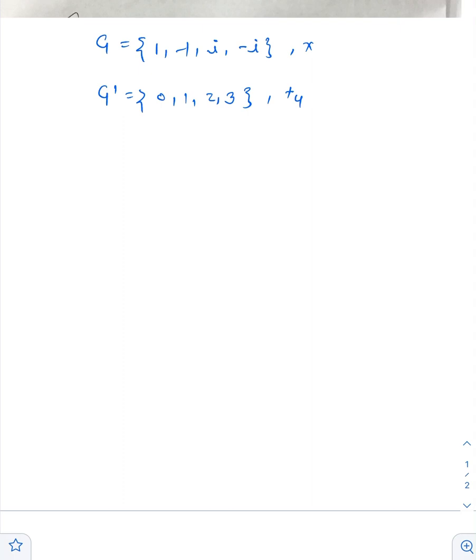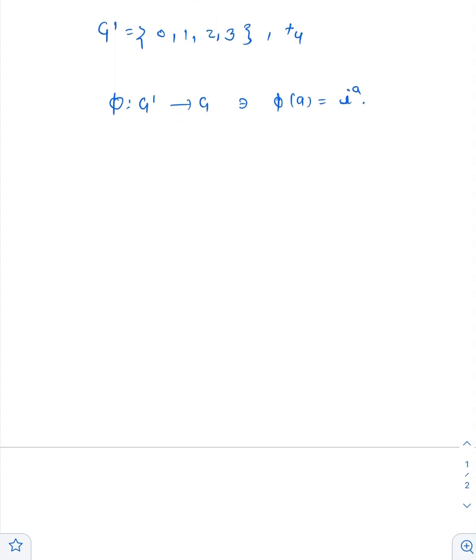For that we define a function phi from G' to G such that phi of A equals i to the power A. To prove phi is an isomorphism, we need to prove that this function is a homomorphism as well as bijective. So first we need to prove that phi is a homomorphism.